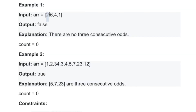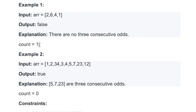Let's trace through example one. The first element is even so count equals zero. The second element is also even, count equals zero. The third element is also even, count equals zero. The last element is one which is odd, so count becomes one. We reach the end of the array and since count never reached three, we return false.